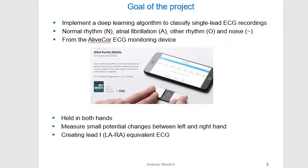The goal of the project was to implement a deep learning based algorithm that can classify single lead ECG recordings into normal rhythm, atrial fibrillation, other rhythm, and noise.